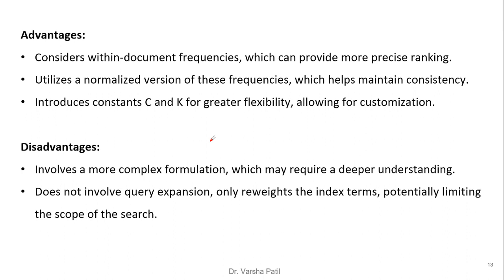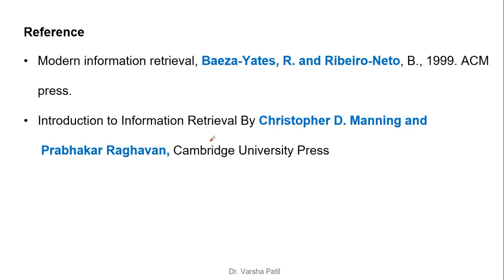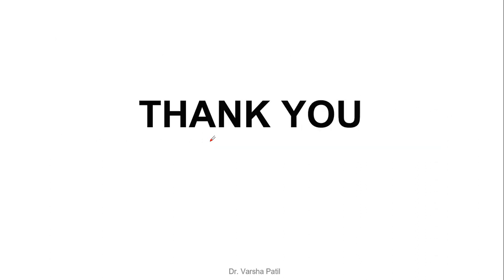Advantages of the variant of probabilistic term reweighting: it considers within-document frequency (TF) for more precise ranking; uses a normalized version of term frequency keeping values between 0 and 1 for consistency; and introduces constants c and k for greater flexibility and customization. Disadvantages: it involves a more complex formulation requiring deeper understanding; it does not involve query expansion — only the original index terms are reweighted, limiting search scope. Unlike the vector space model where new query terms are added, both the probabilistic model and its variant only perform term reweighting, so it is important to provide a powerful initial query with sufficient terms.